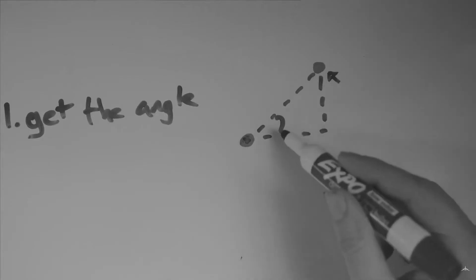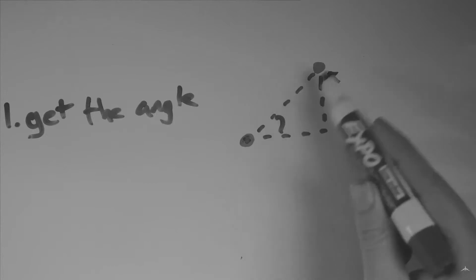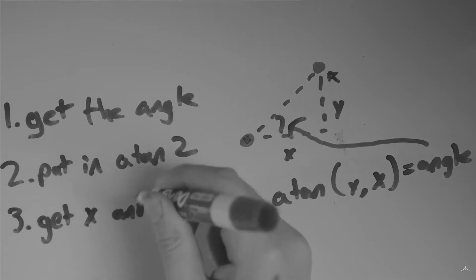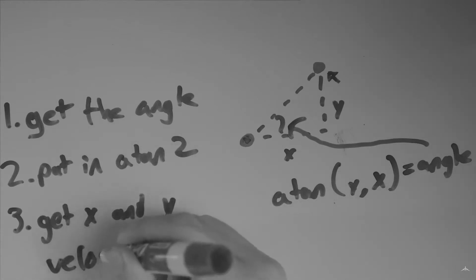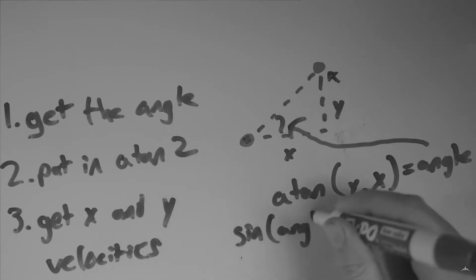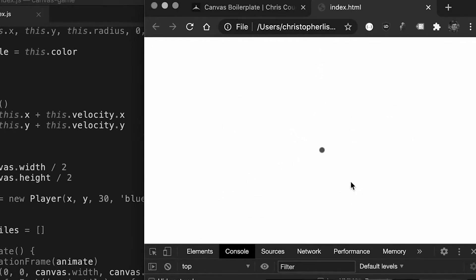The more advanced way that some people use is trigonometry to send the object going in any direction you want it to. All you need is a direction to send the object in, and from that you can work out the x and y velocities through the cosine and sine of the angle respectively. You can then multiply these velocities by a set speed to send the object going in that specific direction. This is obviously the more favoured method, because the object is no longer constrained to moving in a direction that conforms to either its x or y axis.